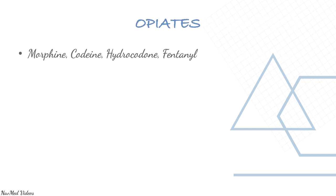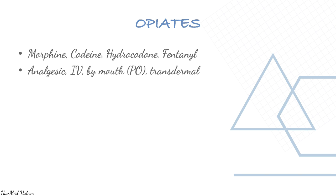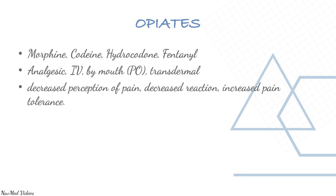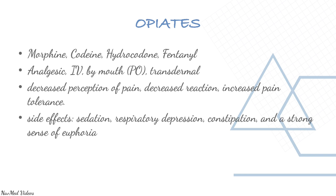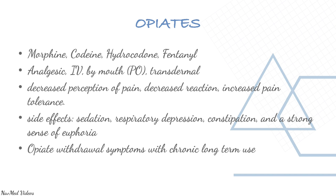Opioids are very important for controlling stronger pain. Morphine, codeine, hydrocodone, and fentanyl can be given IV, by mouth, or transdermally. They decrease the perception of pain, decrease reaction, and increase pain tolerance. Side effects include sedation, respiratory depression, constipation, and a strong sense of euphoria, as well as opioid withdrawal with chronic long-term use.